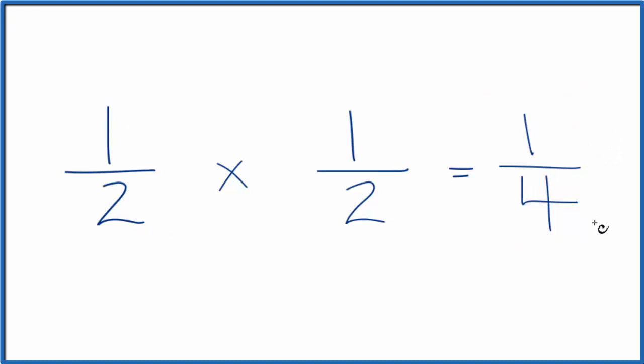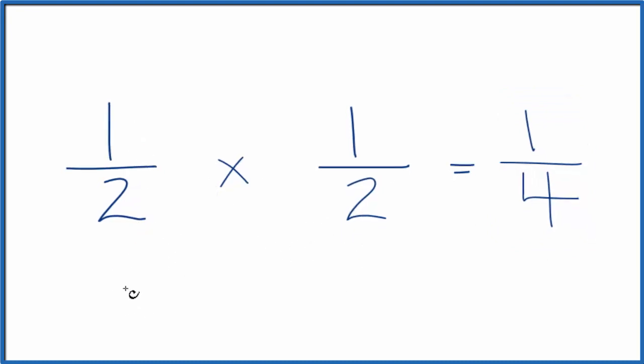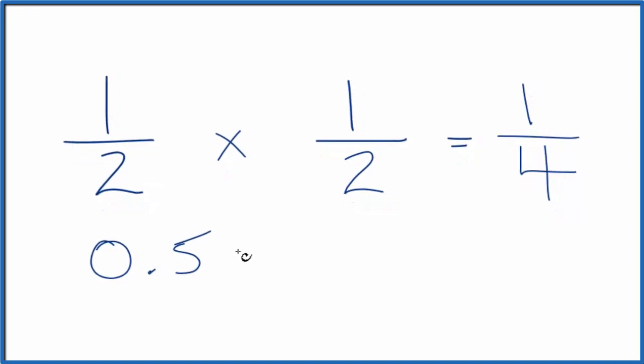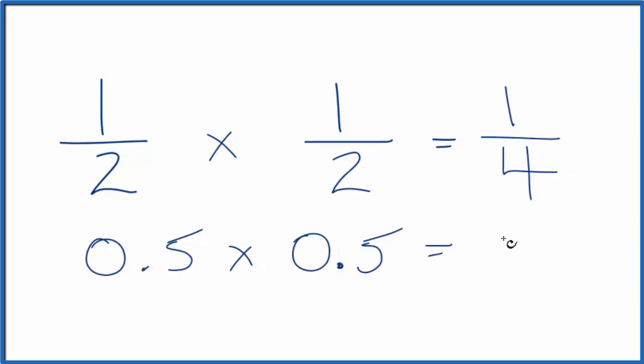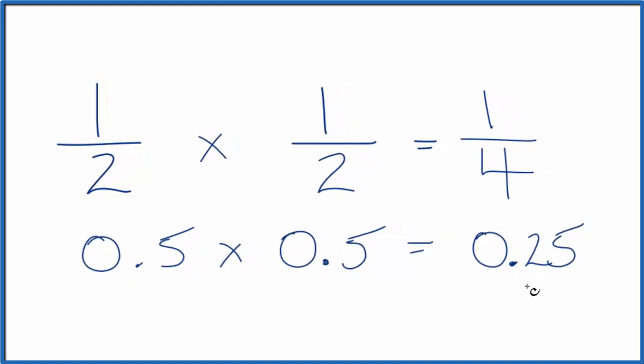We could check this by looking at the decimals for each fraction. We know that one divided by two, one half, that's 0.5. We're going to multiply that times one divided by two, 0.5. And when we multiply 0.5 times 0.5, we get 0.25.